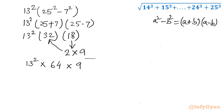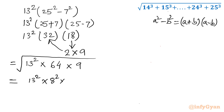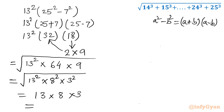Now, square root is there. Finally, we take the square root of 13² times 64 times 9. We know 64 is the square of 8 and 9 is the square of 3. Taking the square root removes the squares, giving us 13 times 8 times 3, which equals 312. So our answer is 312.